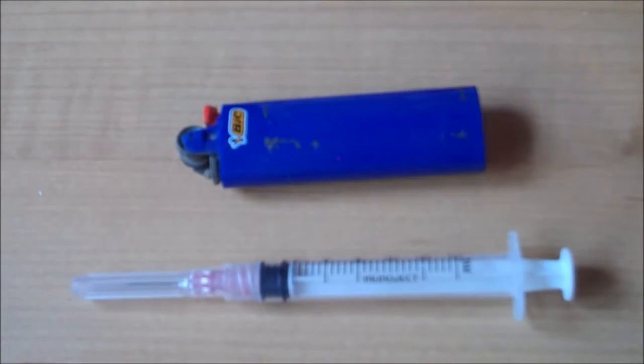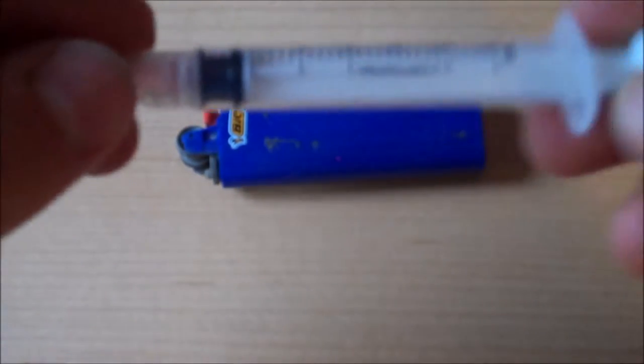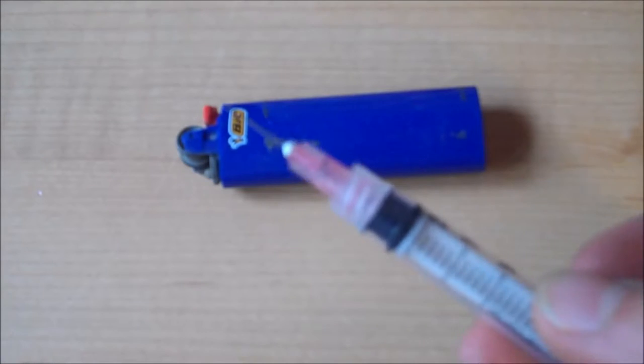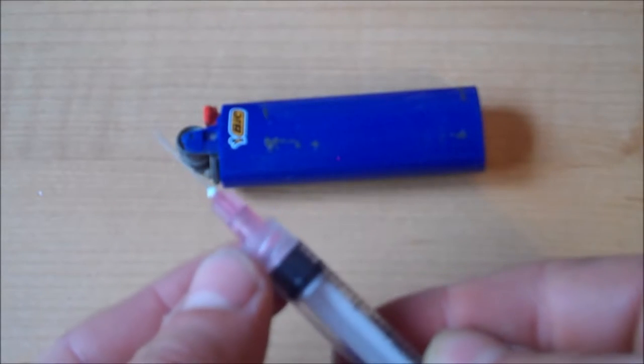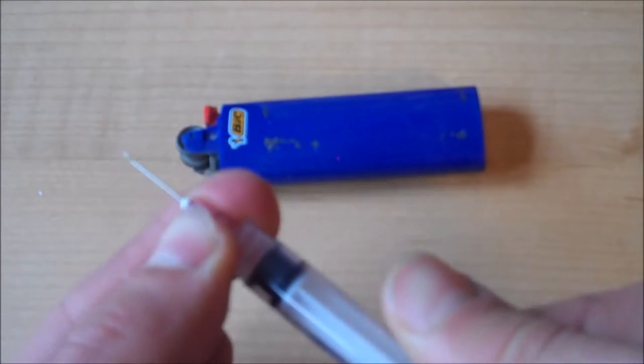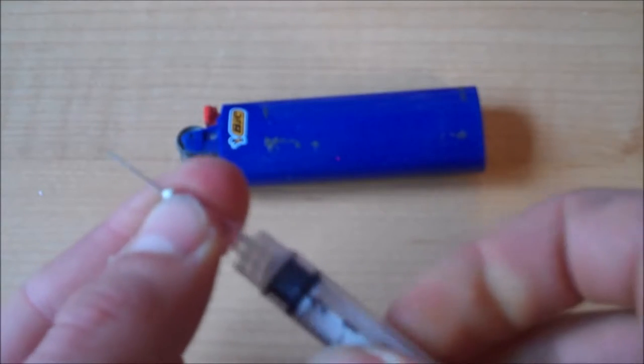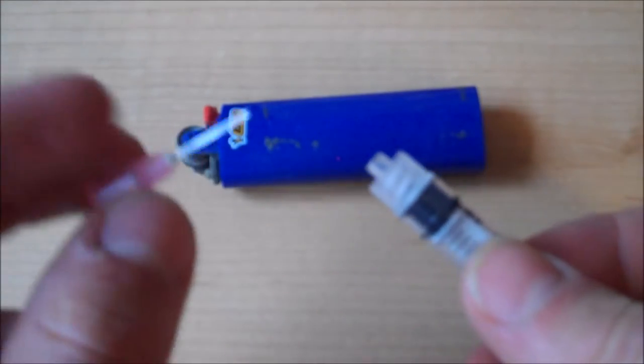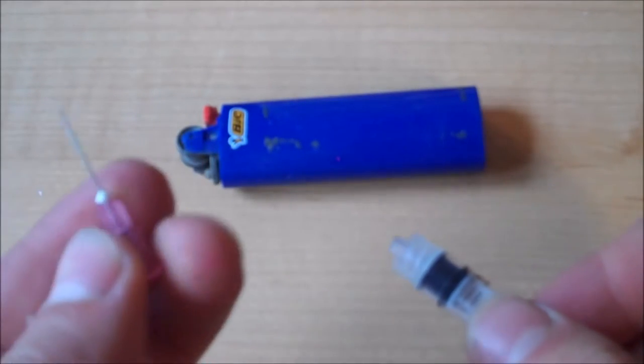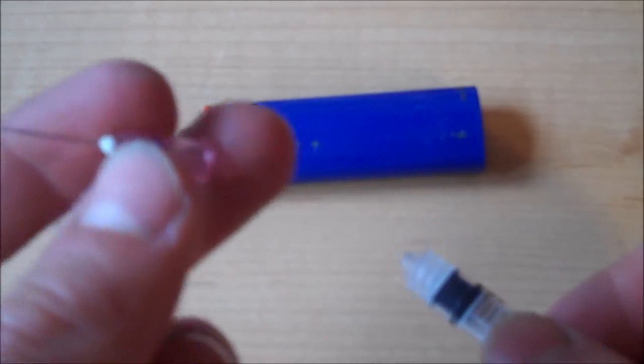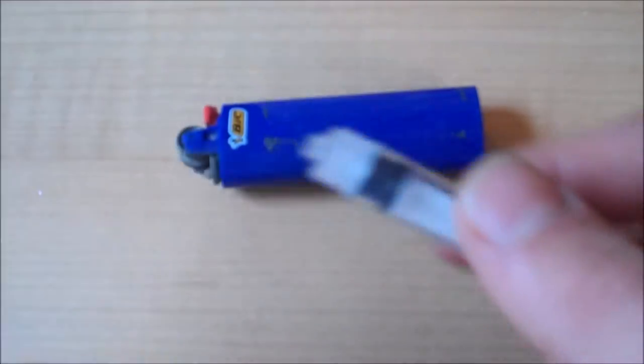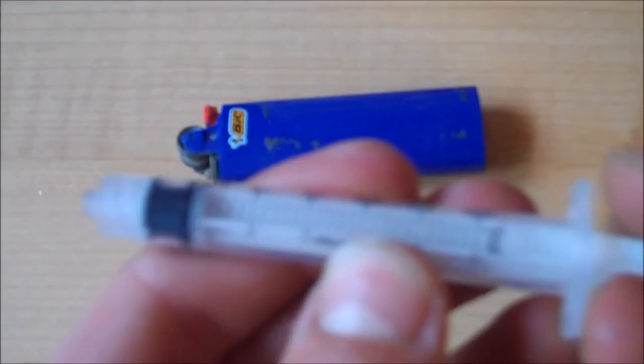To make the actual flamethrower, grab your needle, and take off the safety cap, and then carefully, depends on the model, but on mine you can just unscrew the top, and the actual pointy part will come off. So, you're going to safely dispose of this in a sharps container or something. And, of course, use an unused needle because if not, that would be very unsanitary and quite gross.